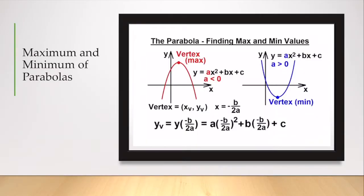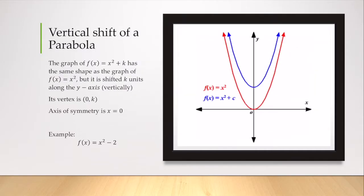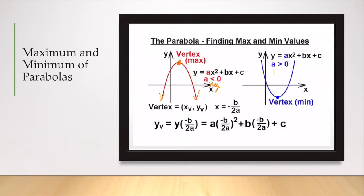If a is less than zero, so negative, the graph is concave down and the vertex is the maximum — the maximum y value. If a is greater than zero, so positive, then the vertex is the minimum — the smallest value the function can take on. We're going to use this fact to solve some word problems using quadratics right at the end of this section.